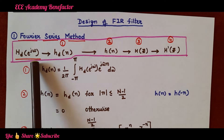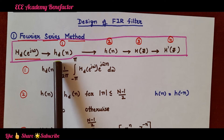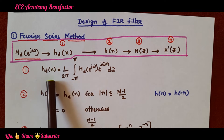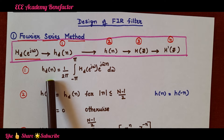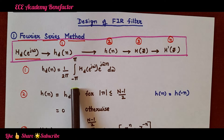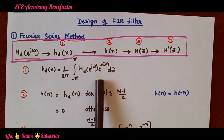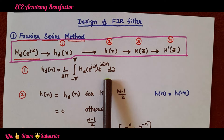For this, the first step is to find h_d(n). h_d(n) is the desired impulse response, and it is computed by the formula: h_d(n) = (1/2π) ∫ from −π to π of H_d(e^(jω)) · e^(jωn) dω.